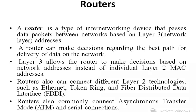A router is a type of inter-networking device that passes data packets between networks based on layer 3 — network layer — addresses. A router can make decisions regarding the best path for delivery of data on the network. Layer 3 allows the router to make decisions based on network addresses instead of individual layer 2 MAC addresses.